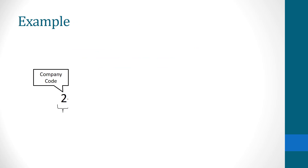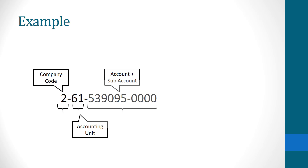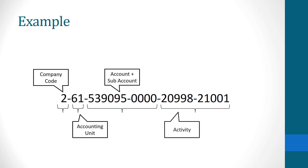A typical finance code will be made up of four components: the company code, the accounting unit, the account and sub-account, and the activity. The rest of this video will explain each.